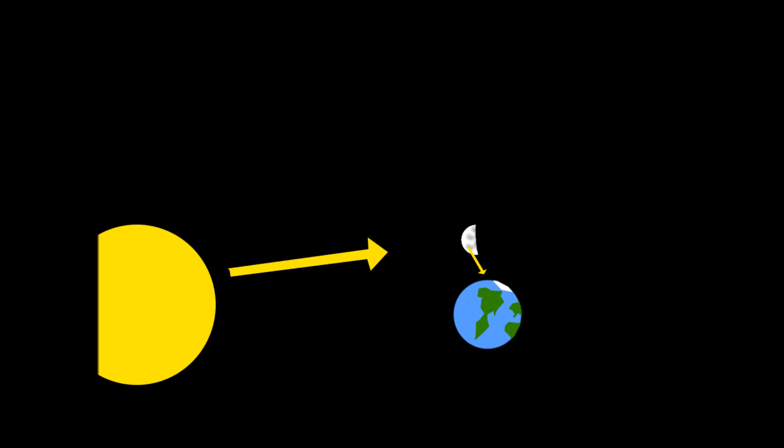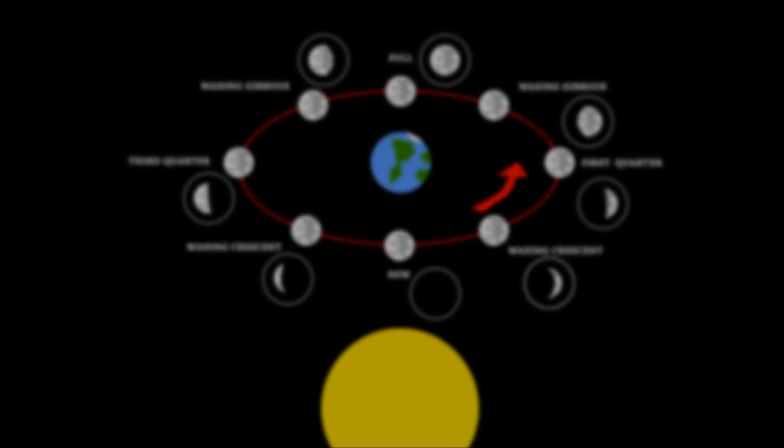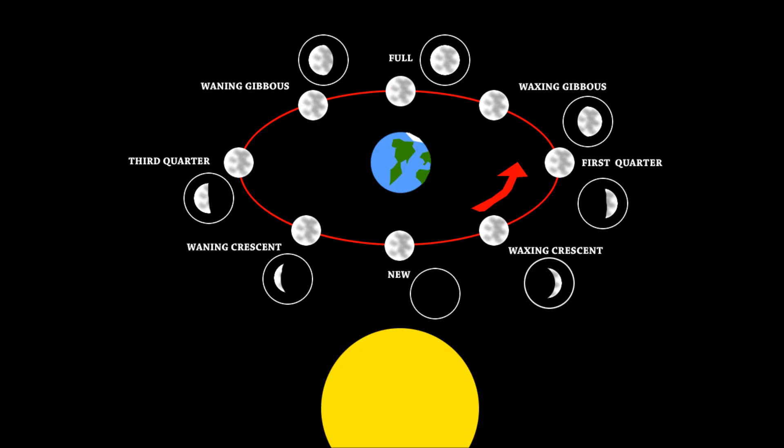Now after the moon returns to its new moon phase, the process will start over again. So after the third quarter, it's going to come back around and become in between the Earth and the sun.